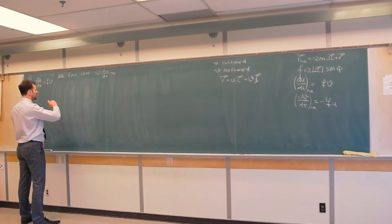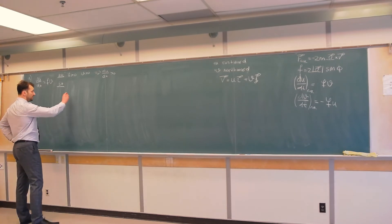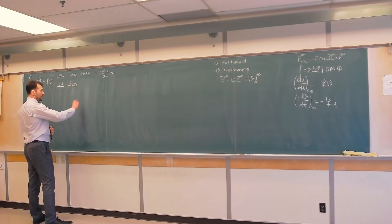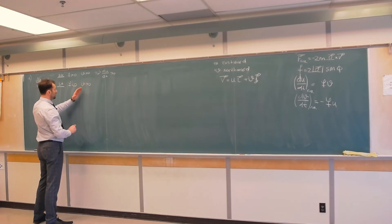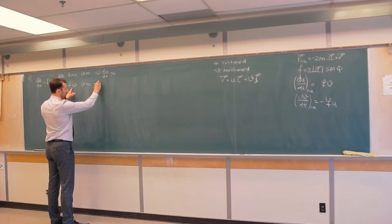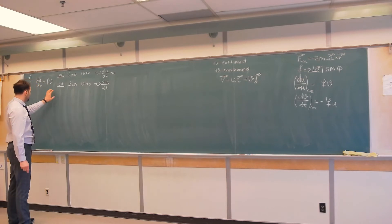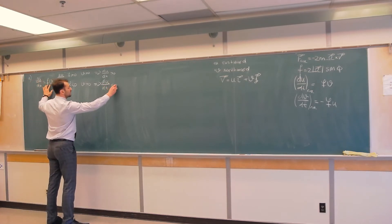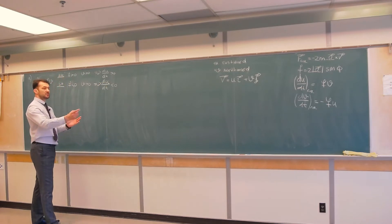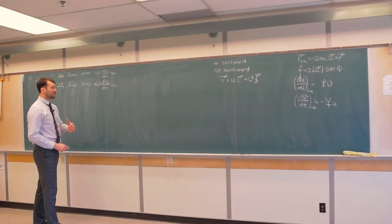Now let's look at the southern hemisphere. The southern hemisphere has F that is negative. If we take V that is also positive — meaning northward motion in the southern hemisphere — what is Du/Dt going to be? Well, F is negative and V is positive, so the product is negative. This is a negative quantity, meaning the parcel of air is accelerating towards the west, and that's to the left of the original motion.